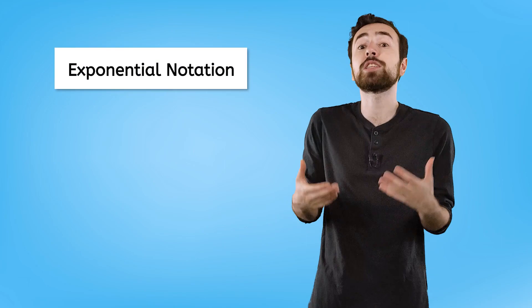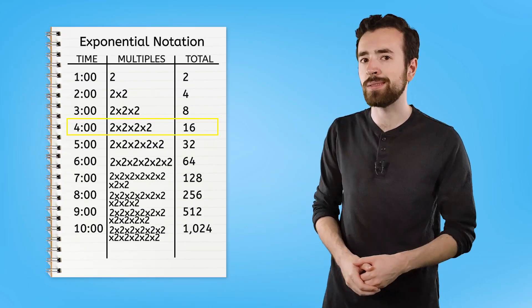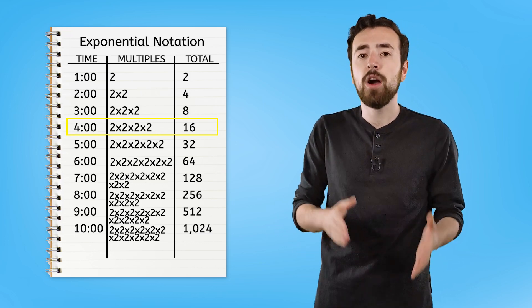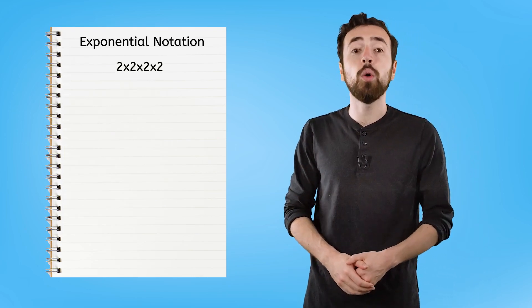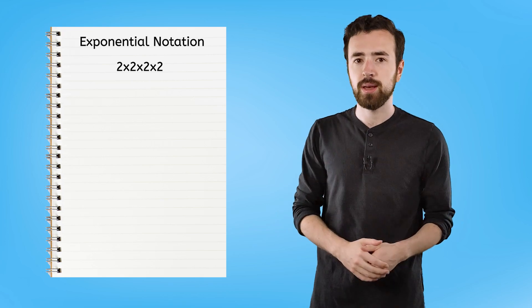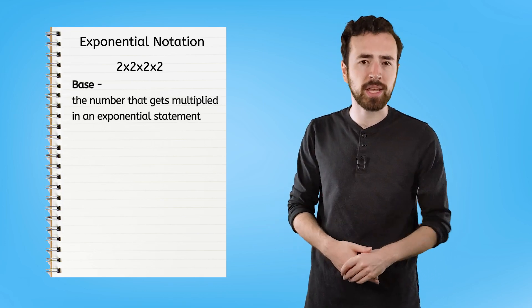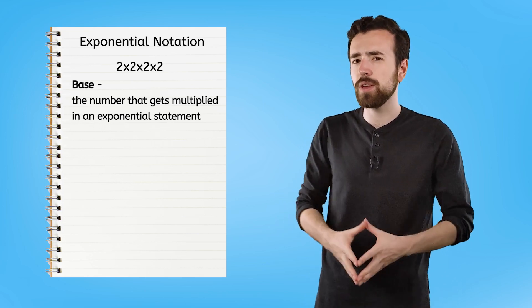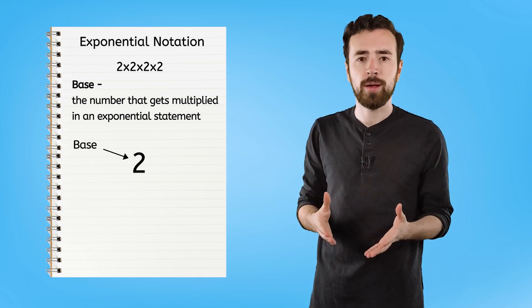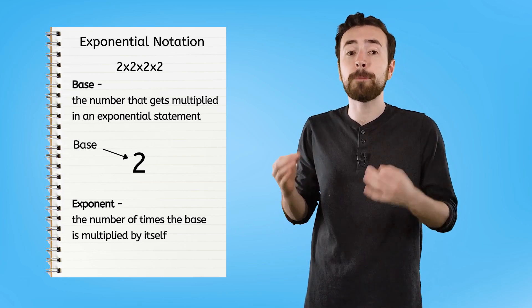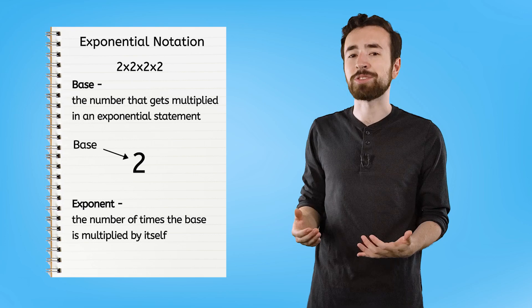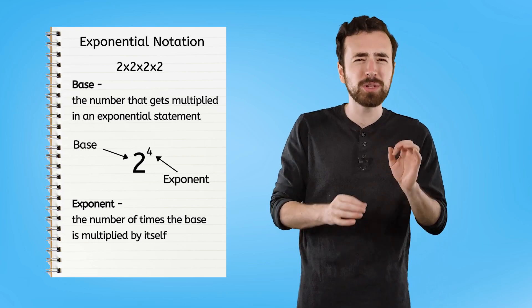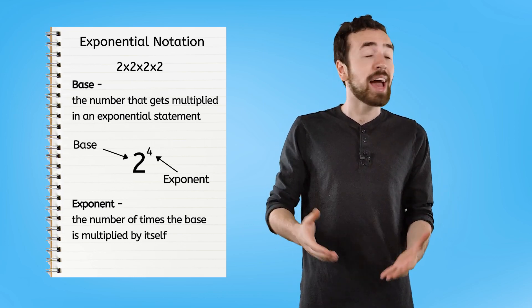For repeated multiplication, there is a similar shorthand notation called exponential notation. Let's take a look at the multiples in the fourth row in the chart where we are multiplying two by itself four times. A number in exponential notation always has two parts: the base and the exponent. The base is the number that gets multiplied — in this case, two. The exponent is the number of times we are multiplying the base by itself — in this case, four. We write the exponent smaller above the two, almost like it's in a corner. This whole expression is now read as two to the fourth power.